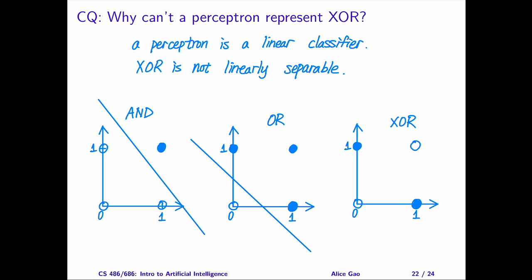negative examples using one line. If we really want to separate them, we'll have to draw a circle or use two lines. I'm showing you both examples on the graph, two red lines or the yellow circle. This means that XOR is not linearly separable, and we cannot use a perceptron to represent XOR.